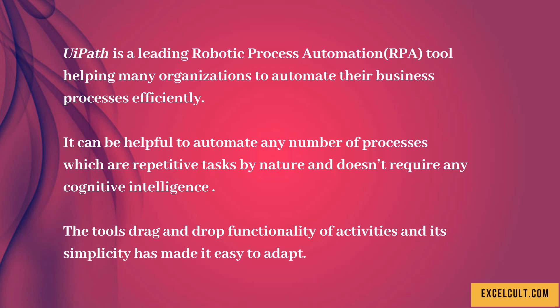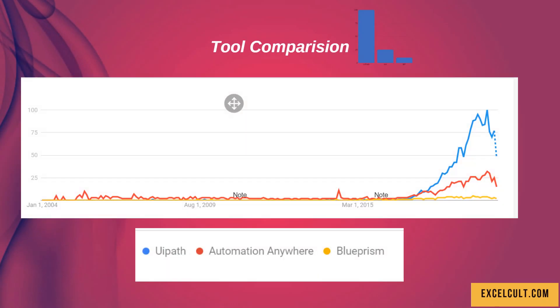Still thinking about it and confused about which tool to pick and why UiPath? Here are the stats. As you can see, these are the trends from 2004 to 2019. Here is how you can see the growth of UiPath has been. The blue one is UiPath, the red is Automation Anywhere, and the yellow is Blue Prism.